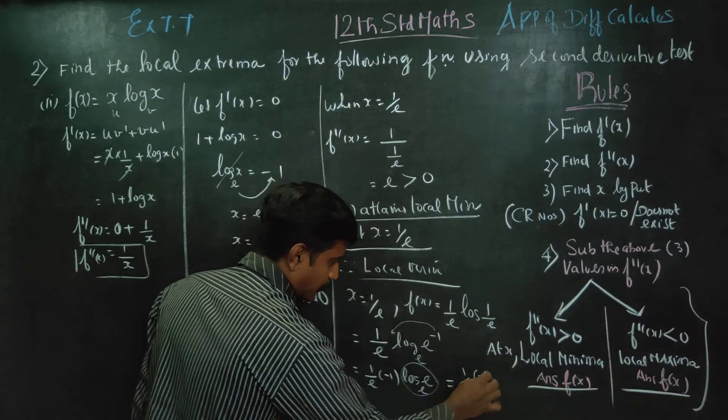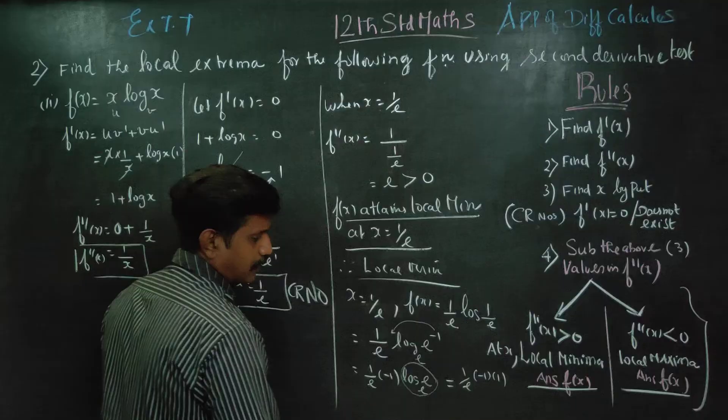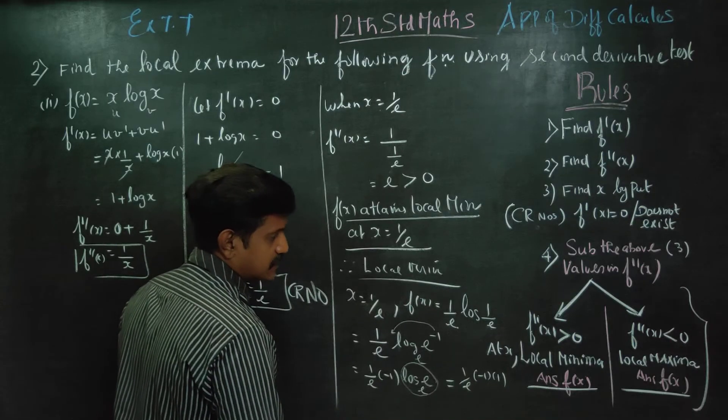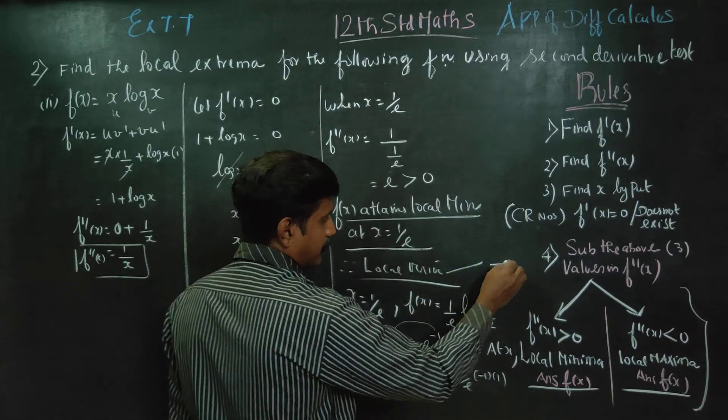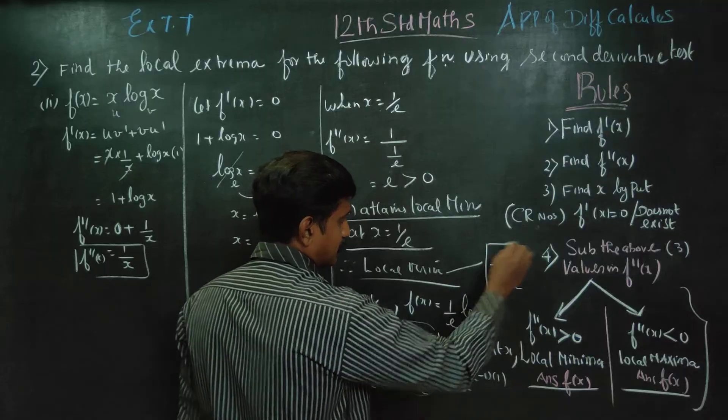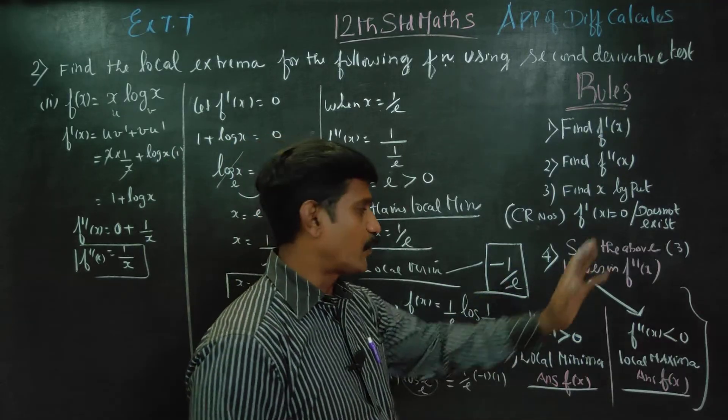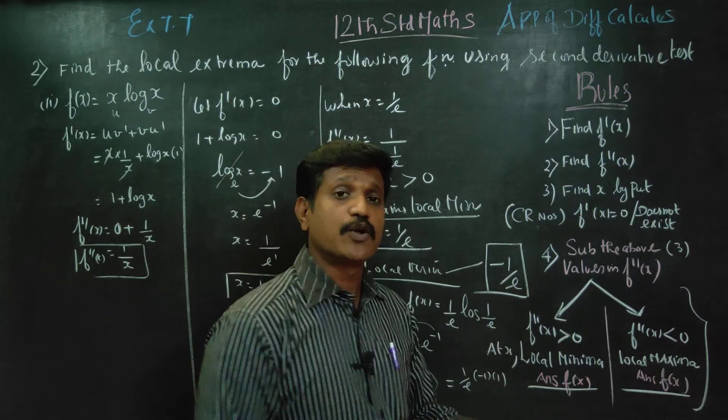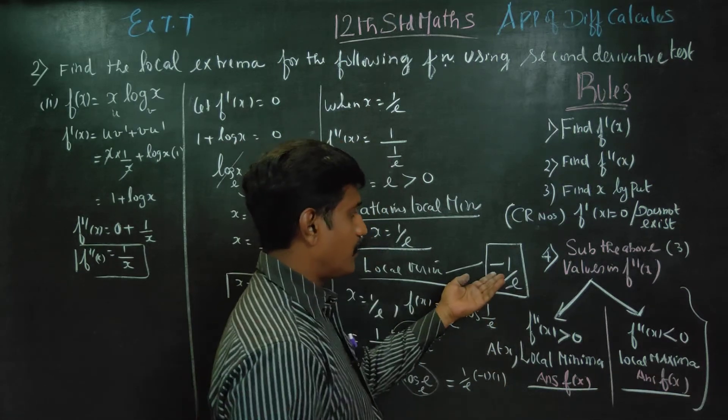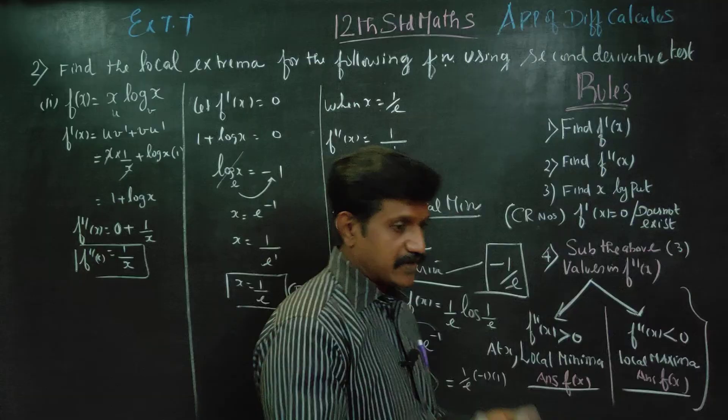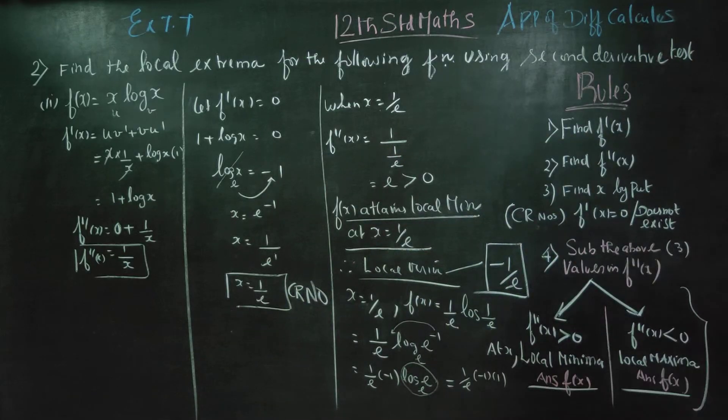So 1/e × (-1) × 1. What is your final answer? The local minimum value is -1/e. E is approximately 2.7, so this equals approximately -0.37. The exact answer is -1/e.